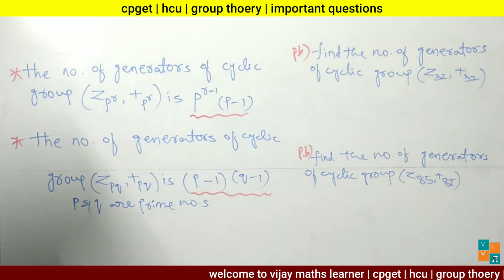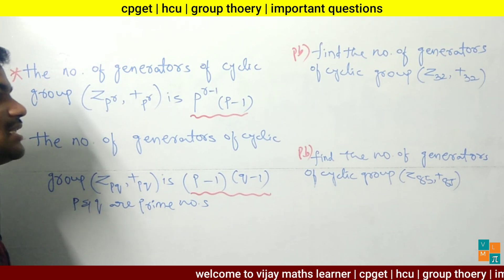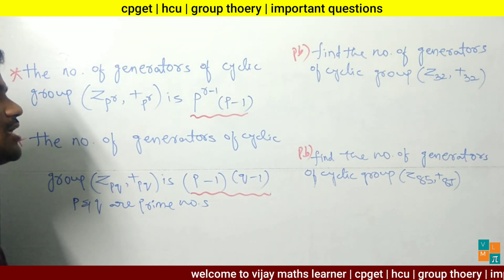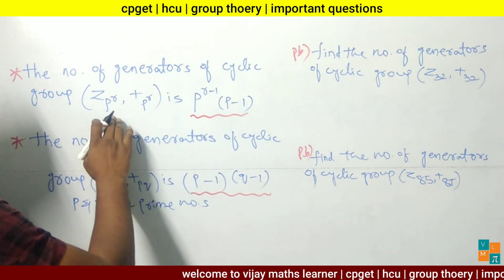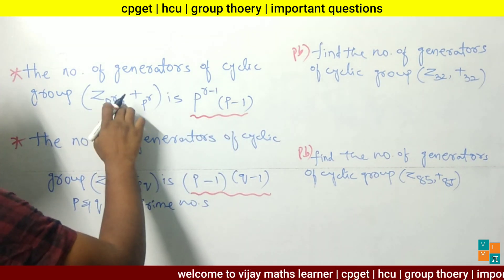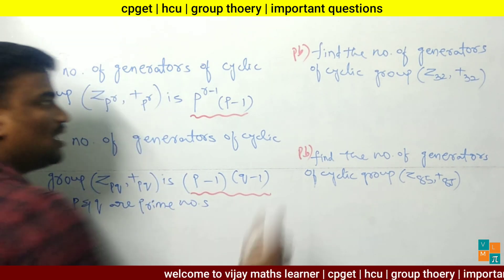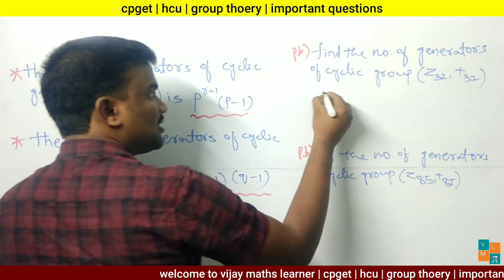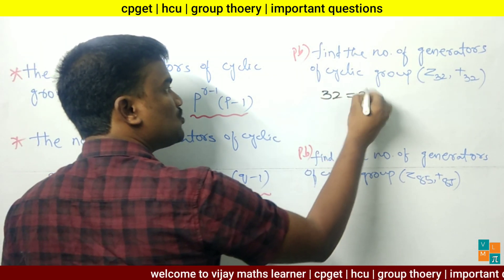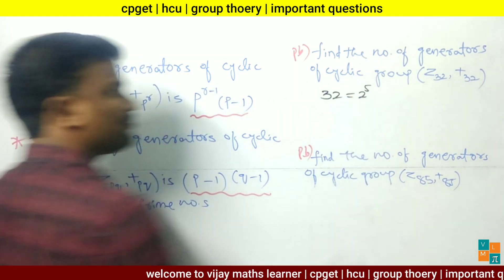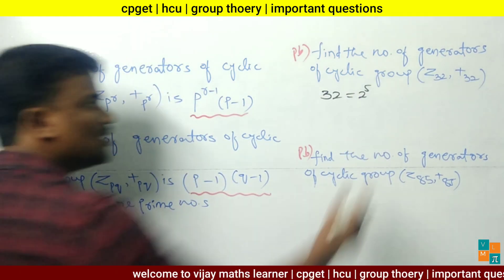See the problem: find the number of generators of cyclic group Z32 with addition modulo 32. Here, p raised to r means a prime number raised to some integer. 32 can be written as 2 to the power of 5.